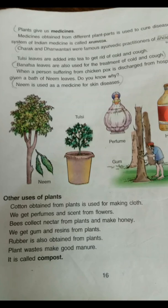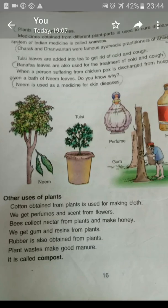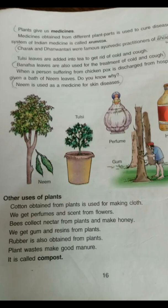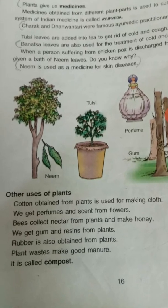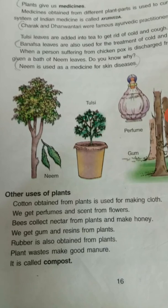Other uses of plants include: cotton obtained from plants is used for making cloth, and we get perfume and scent from flowers. Bees collect nectar from plants and make honey. We also get gum and resin from plants, and rubber is also made from plants.